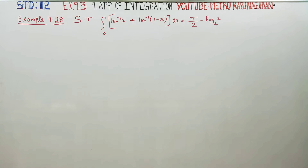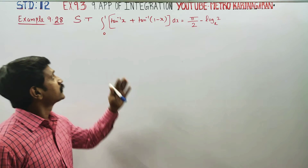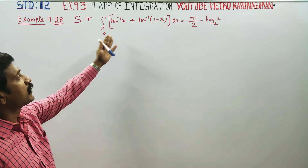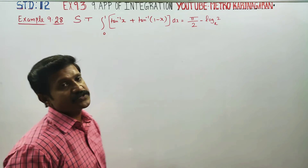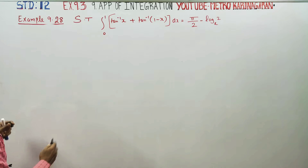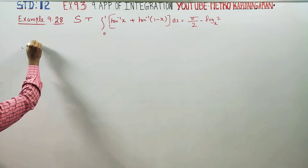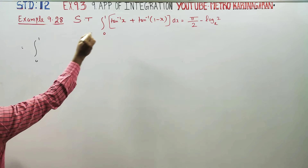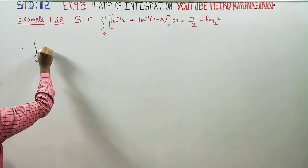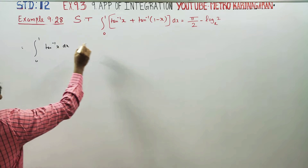Hello 12th standard students. In example 9.28, you have to show that the integral of this expression is π/2 minus log 2 to the base e. First, in the integration, in the second stage, we have 0 to 1 tan inverse of x dx.